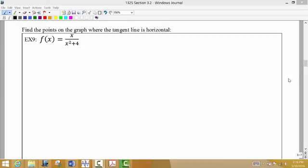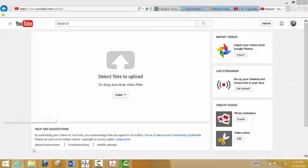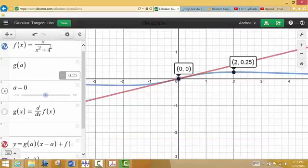For this example, we're going to look for all the points on the graph of f where the tangent line is horizontal. So let's look at Desmos before we actually start looking for the points, see what we're actually looking for. So I have x divided by x squared plus 4, and I went ahead and put this into my tangent line calculator so I can see what that looks like.